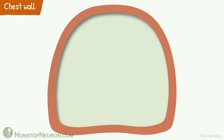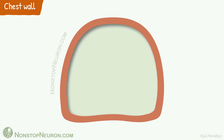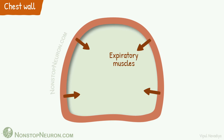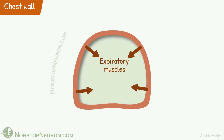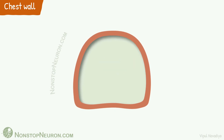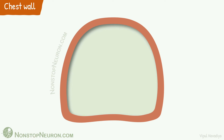So when this expanding force is released, the chest wall moves inward to its resting position. Expiratory muscles, on the other hand, reduce chest wall volume, and again when the force is released, the chest wall moves outward.